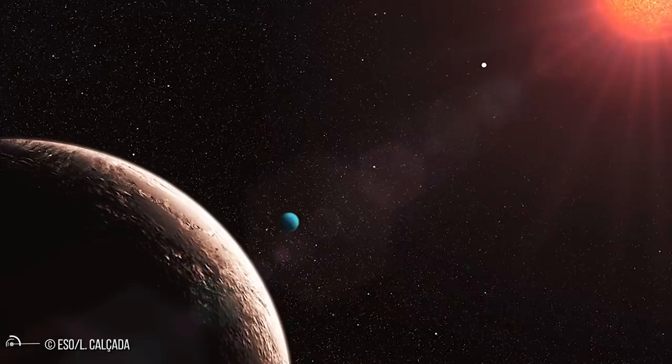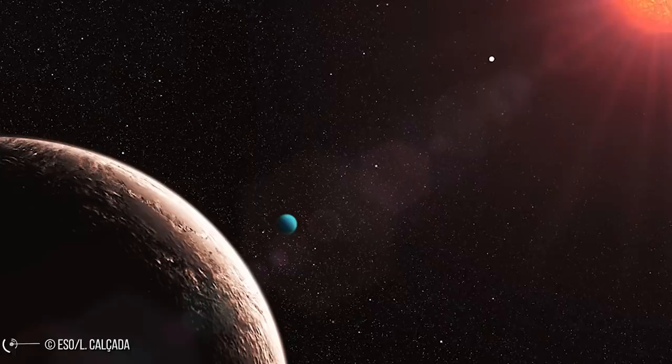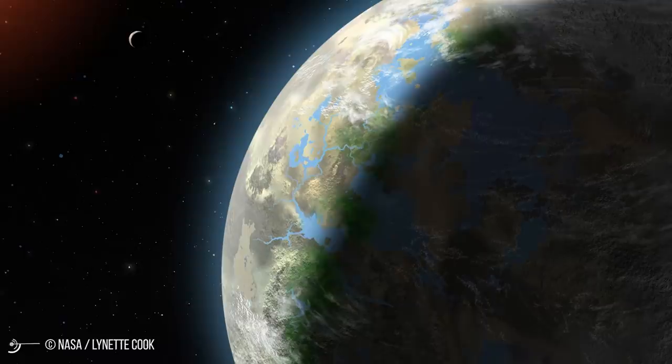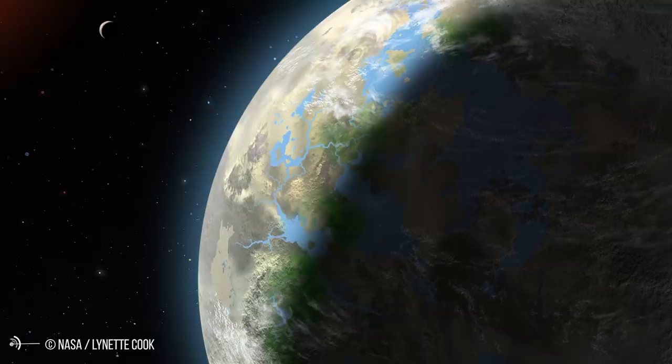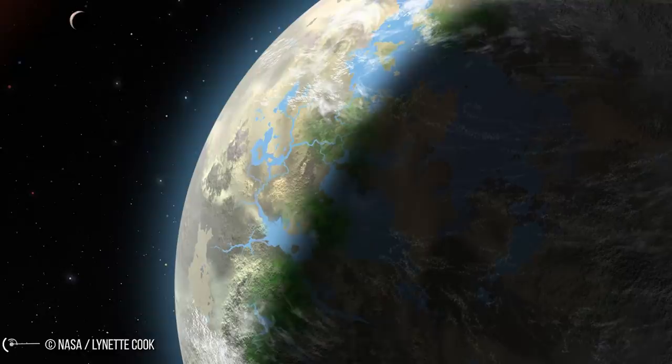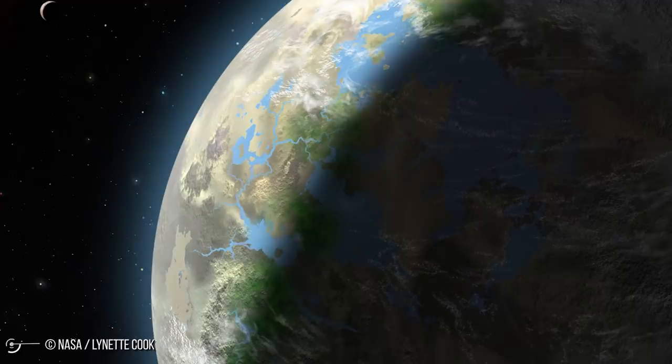The planet is a super-Earth of around 2.5 times the mass of Earth and is thought to be tidally locked to its star. The actual habitability of the planet depends on the composition of its surface and the atmosphere. It is thought to have temperatures around minus 37 to minus 11 degrees Celsius. By comparison, Earth has an average surface temperature of 15 degrees Celsius, while Mars has an average surface temperature of about minus 63 degrees Celsius.